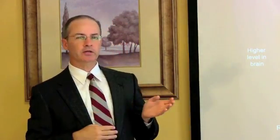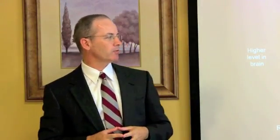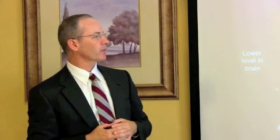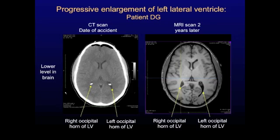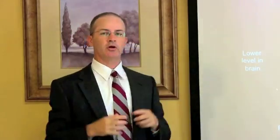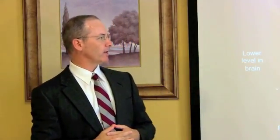So that's what we did, and here we found that the later MRI scan showed clear enlargement of the ventricles compared to the day-of-accident CT. Here's another slide showing a level a little bit lower in the brain to make sure we don't have some artifact of slice angle. Again, we see that the lateral ventricles — particularly the posterior parts called the occipital horns — are larger two years later than they were on the day of the accident.